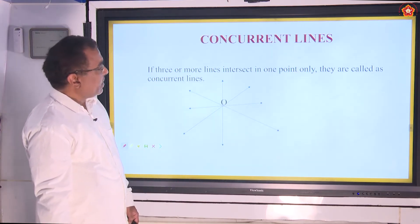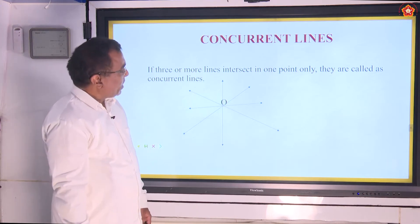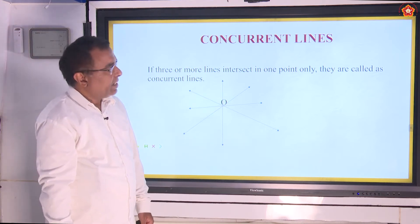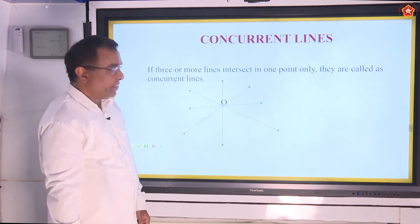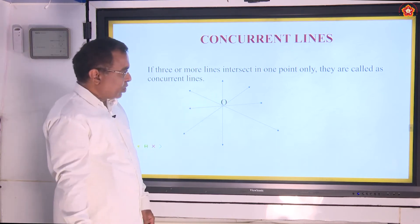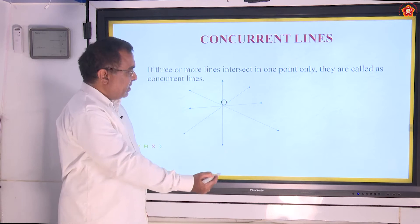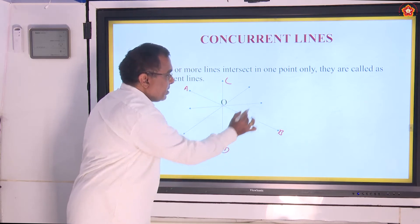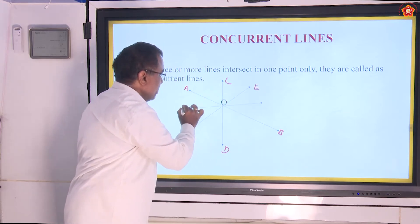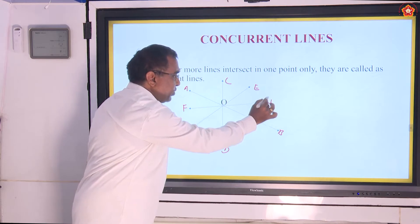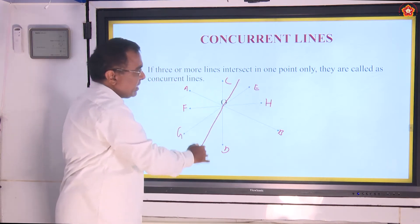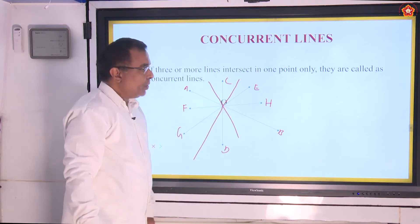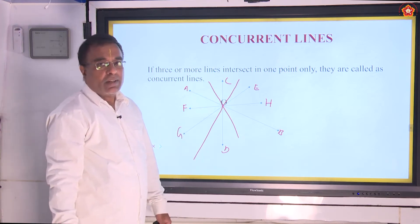Next, concurrent lines. If three or more lines are going to intersect at one common point only, then they are called as concurrent lines. Look at the figure drawn — you have lines AB, CD, EF, GH and so on. If they are all intersecting at the same common point O, then all these lines are said to be concurrent lines.